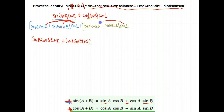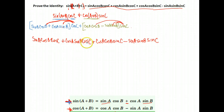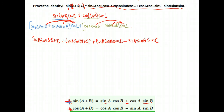Now distributing sine C through the next bracket: the first term gives me cosine A, cosine B, sine C; minus the next term, which gives me sine A, sine B, sine C. Let's verify: sine A cosine B cosine C — perfect; cosine A sine B cosine C — perfect; plus cosine A cosine B sine C — perfect; and finally minus sine A sine B sine C — that's exactly what we needed. We used our identities and showed that the left-hand side, when expanded, looks exactly like the right-hand side. Identity proven.